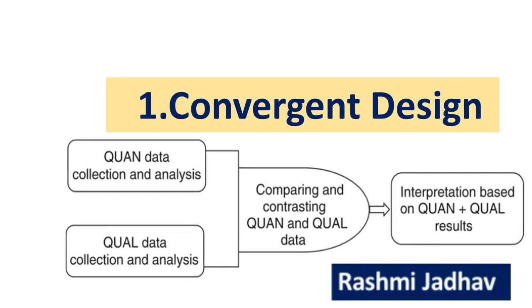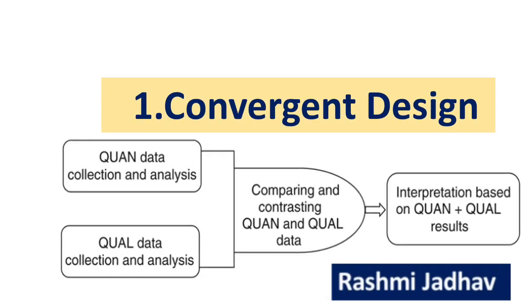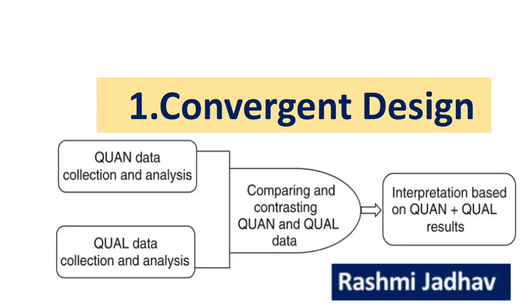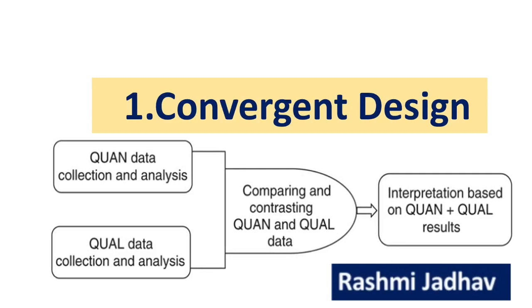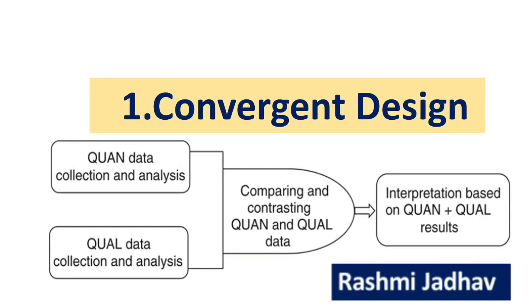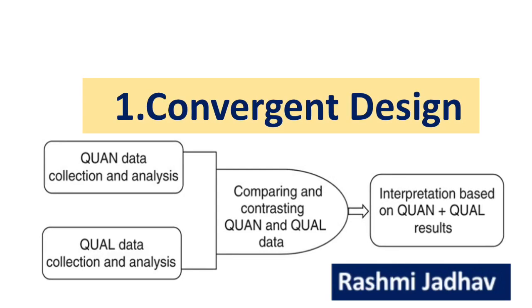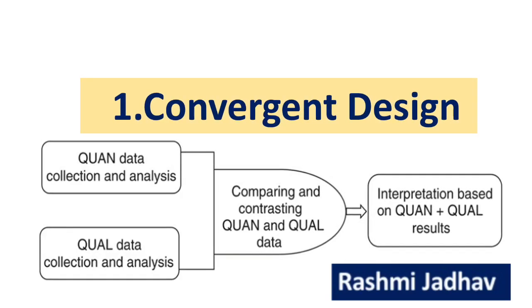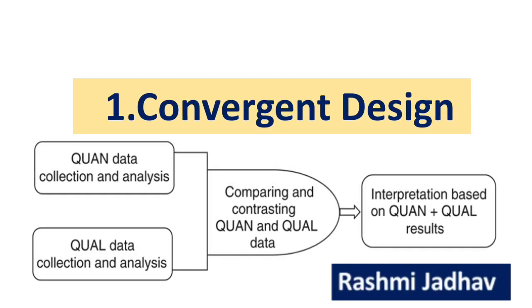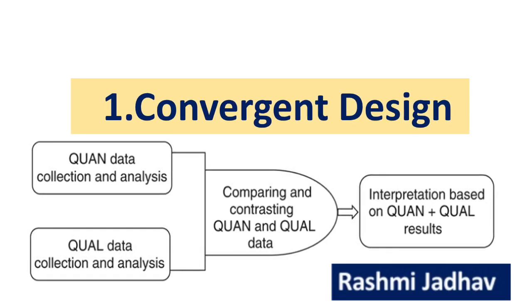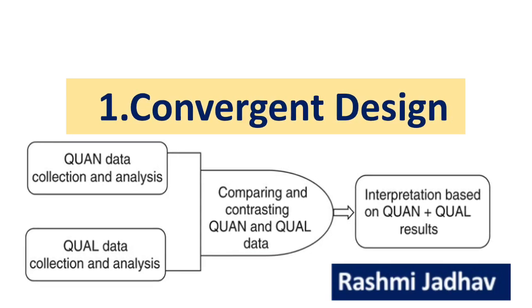This is the diagram of convergent design. First, quantitative data is collected and analyzed. Next, qualitative data is also collected and analyzed. Then, at the time of interpretation, we compare and merge the quantitative and qualitative data.